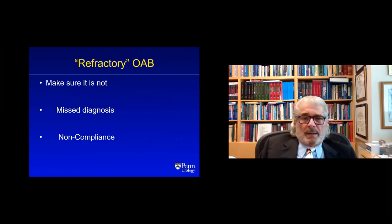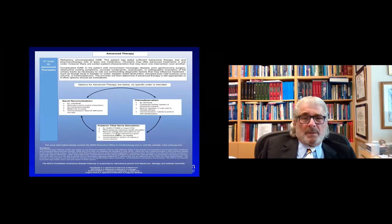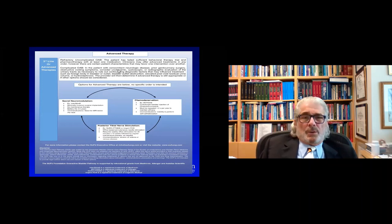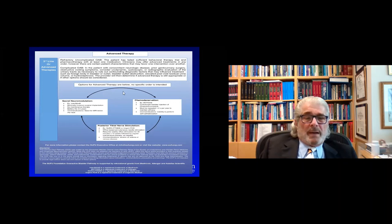What about refractory overactive bladder? First, make sure it's not a misdiagnosis or that patients haven't been compliant with their regimen. The SUFU/AUA guideline on advanced therapy for refractory OAB: this is when urodynamic studies, cystoscopy if indicated, or video urodynamics including lower urinary tract imaging are appropriate. The three things constituting management for refractory OAB are PTNS, sacral neuromodulation, and botulinum toxin.